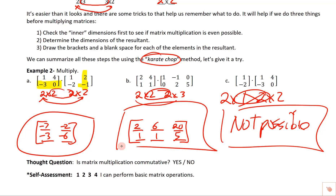Is matrix multiplication commutative — meaning can you switch the order and get the same answer? If you took the two-by-one and switched places with the two-by-two from Example C, the inner dimensions still wouldn't match. Even for two-by-two matrices where switching is dimensionally possible, you will not get the same result. Therefore, matrix multiplication is not commutative.